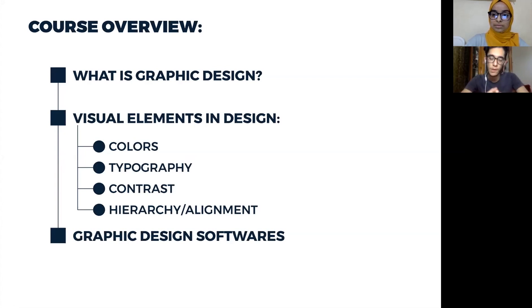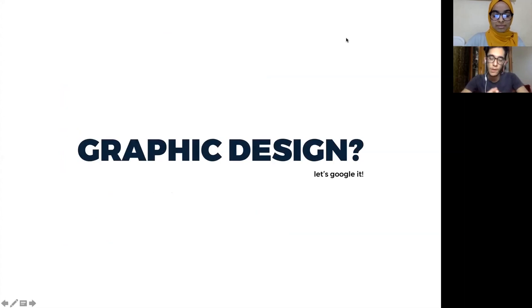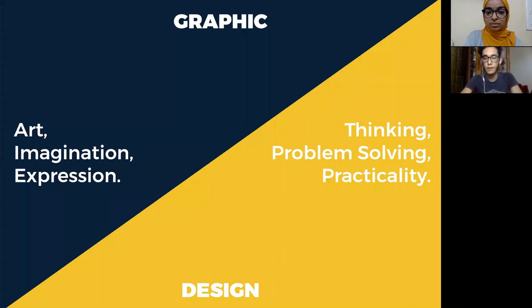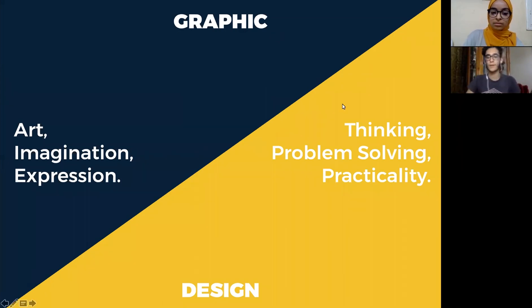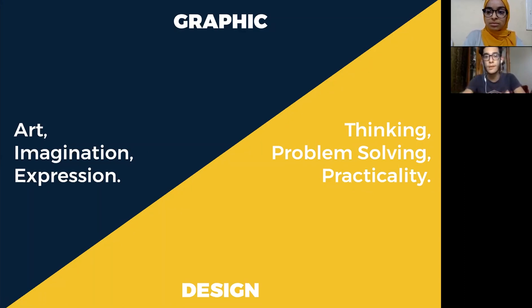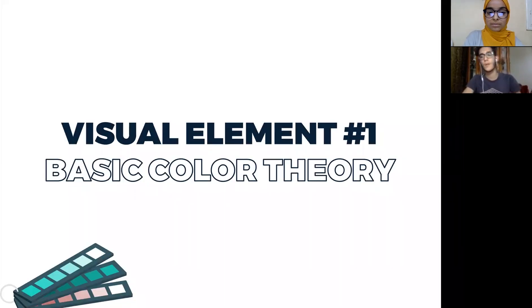The first question that a lot of people encounter is: what is graphic design? When you think about it, there are two aspects — one is expressing whatever it is that you have in your mind to the viewer, and the other aspect is design, which includes the thinking process and the practice. Basically, you're not just doing something artistic but you're trying to solve a problem and deliver a certain message to the audience.